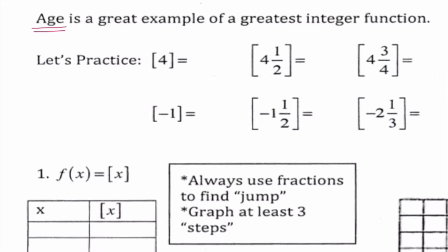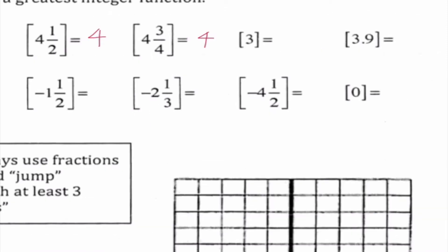So we need to go ahead and practice this. With positive numbers it gets pretty easy; with negative numbers it's a little tougher. What is the greatest integer less than or equal to 4? The answer is 4. Less than or equal to 4½? That would also be 4, because we are rounding down — if you're 4½, you're really only 4. Less than or equal to 4¾? That would be 4. Less than or equal to 3? That's 3. And less than or equal to 3.9? That would also be 3. We are always rounding down to the nearest integer.